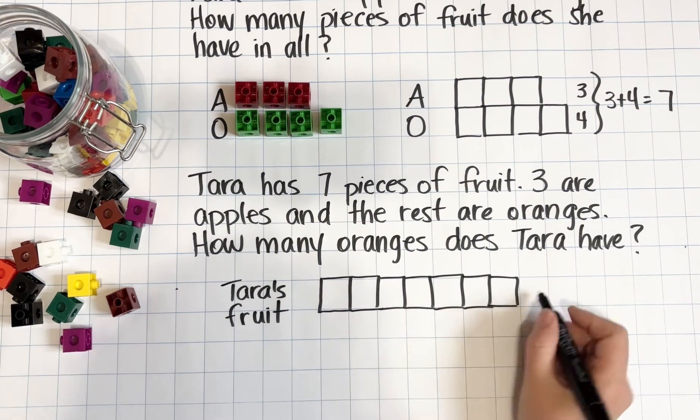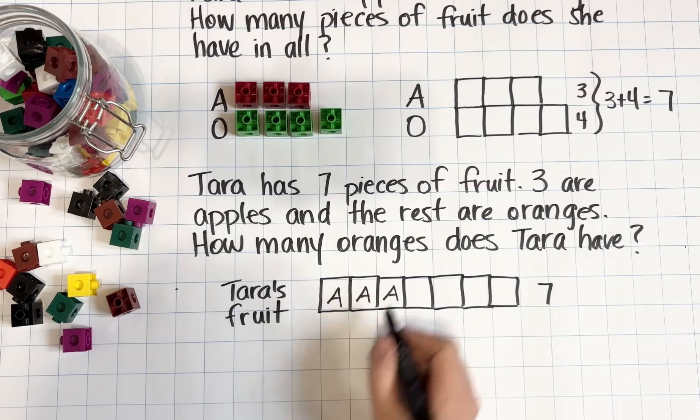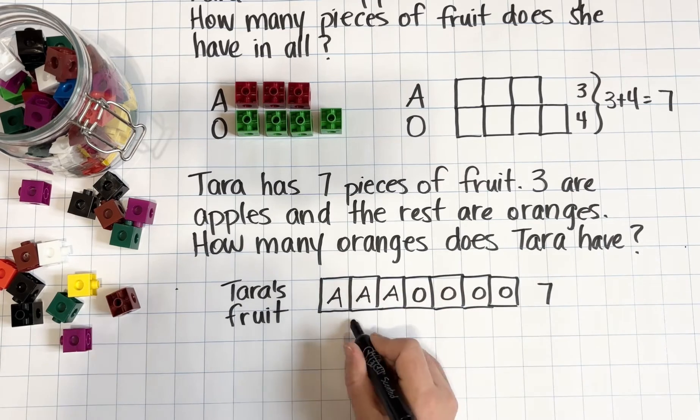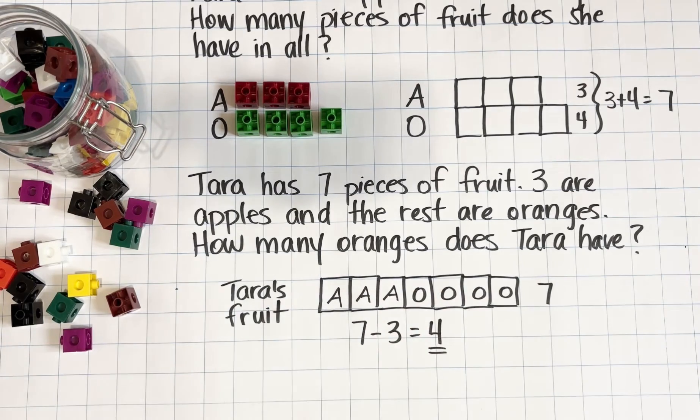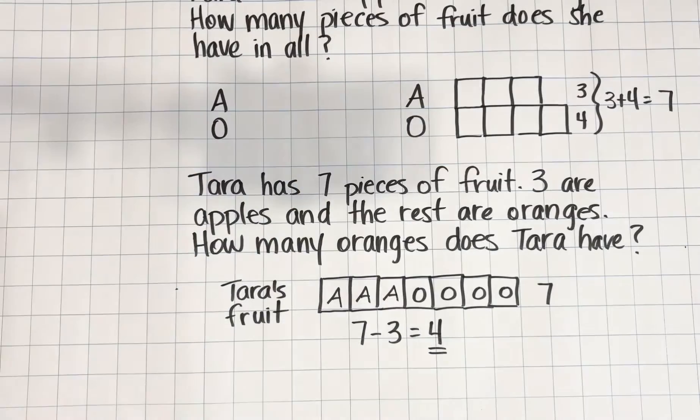We'll put seven pieces of fruit. We know that we have three apples so we'll just mark those with an A, and then it's clear that the remaining four are our oranges. We can also relate that to an abstract representation as I've shown there.